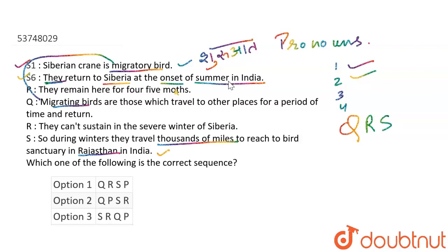And after that, which sentence is left? P. How long do they stay there? 4 to 5 months — they stay there until the summer starts in India. When the summer starts, it starts from Siberia too. So that is sentence number 6. Our order is QRSP, which is option number 1 — that is our right answer.